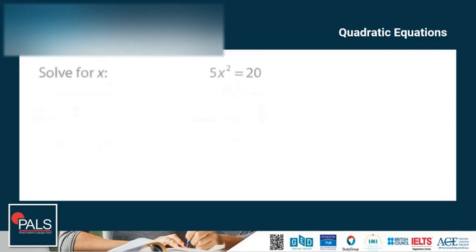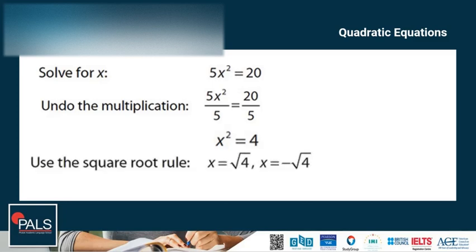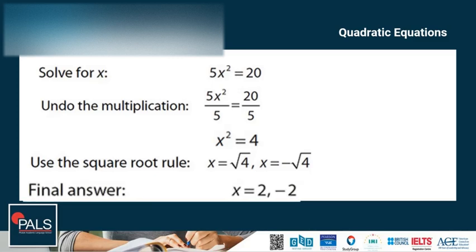Let's try another example: 5x squared is equal to 20. In this case, we need to undo the multiplication first. To undo the multiplication, we divide both sides by 5. So we have x squared is equal to 4. Then, using the square root rule, we have x is equal to the square root of 4 and x is equal to negative the square root of 4. So the final answer is x is equal to 2 and negative 2.